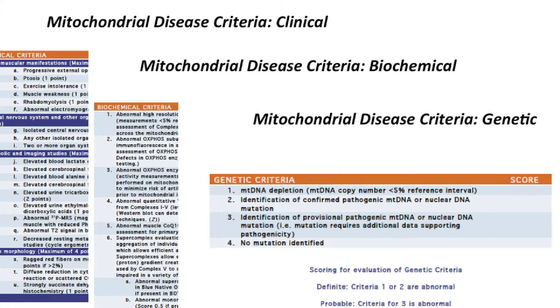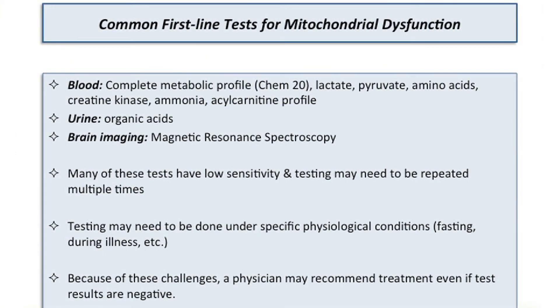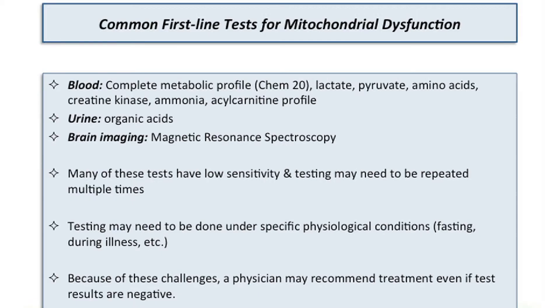You saw before in the detailed criteria for mitochondrial disease all the different tests that can be done, but these are some of the common first-line tests. On blood: a complete metabolic profile (also called a CHEM20), lactate, pyruvate, plasma amino acids, creatine kinase, ammonia, and an acylcarnitine profile. On urine: organic acids. And on brain imaging: a technique called magnetic resonance spectroscopy.